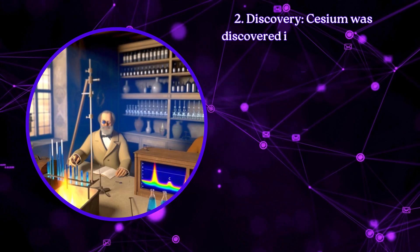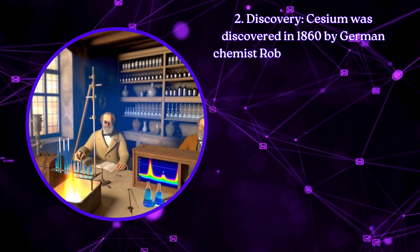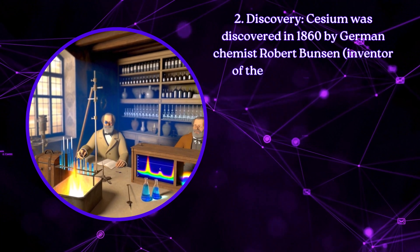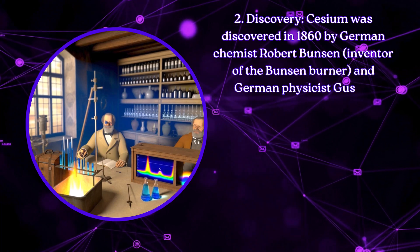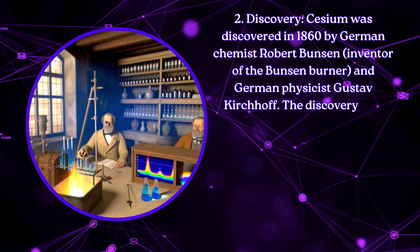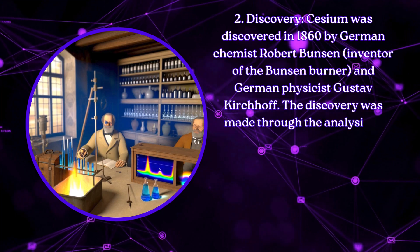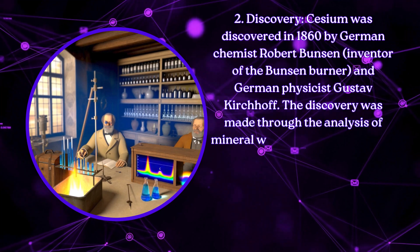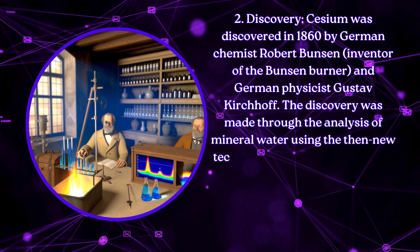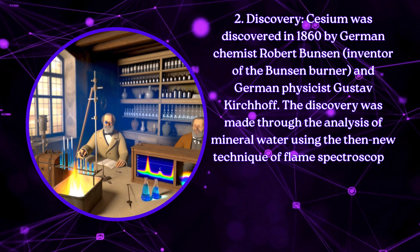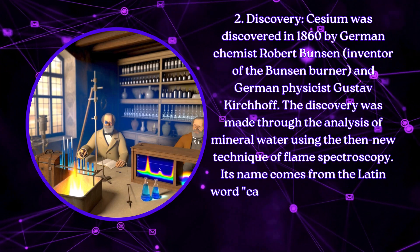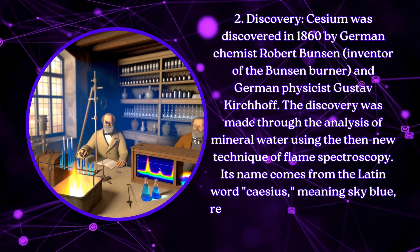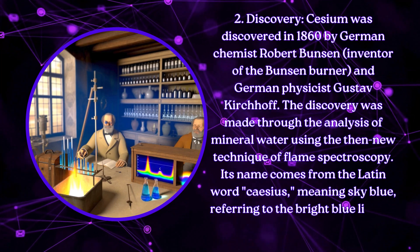Discovery: Caesium was discovered in 1860 by German chemist Robert Bunsen, inventor of the Bunsen burner, and German physicist Gustav Kirchhoff. The discovery was made through the analysis of mineral water using the then-new technique of flame spectroscopy. Its name comes from the Latin word 'caesius', meaning sky blue, referring to the bright blue lines in its spectrum.